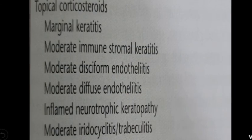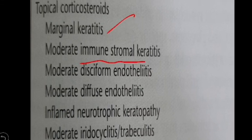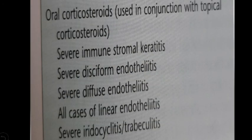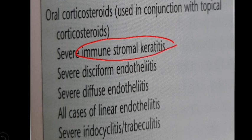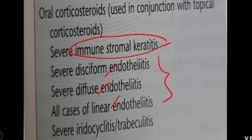Topical corticosteroids can be used in marginal keratitis, immune stromal keratitis, moderate endothelitis (disciform or diffuse type), inflamed neurotrophic keratopathy, and moderate iridocyclitis or trabeculitis. Oral steroids should be used in conjunction with topical corticosteroids in severe immune stromal keratitis, severe endothelitis (disciform, diffuse, and linear), and severe iridocyclitis or trabeculitis.